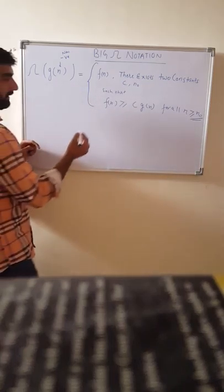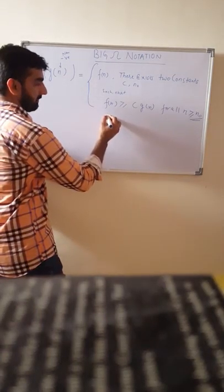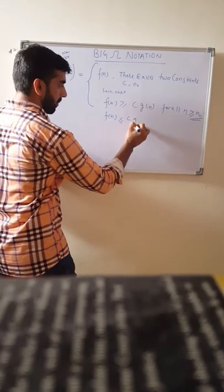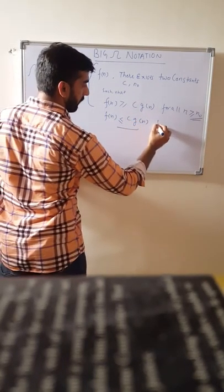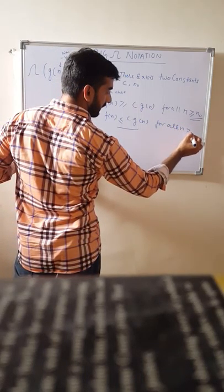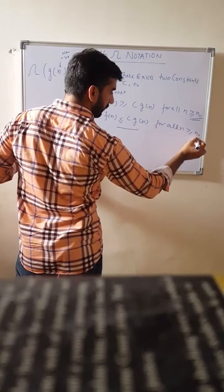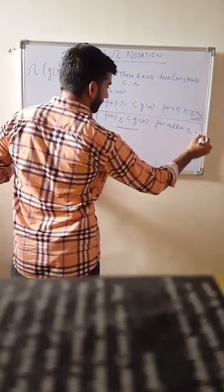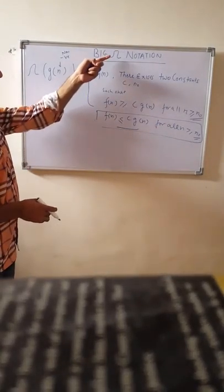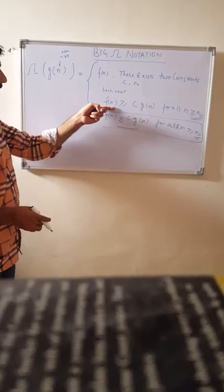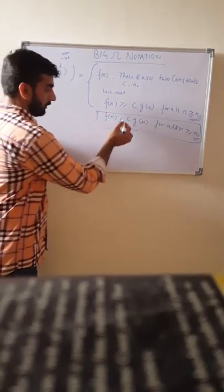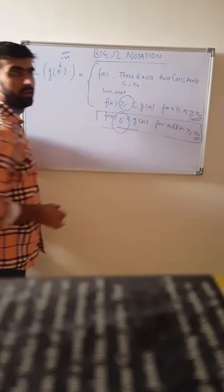This is quite similar to Big O notation. The only difference is that in Big O notation the condition is F(n) ≤ C·G(n) for all n ≥ n₀, whereas Big Omega takes the lower bound and Big O notation takes the upper bound — that is the key difference.